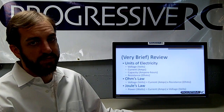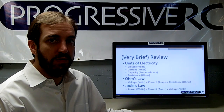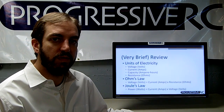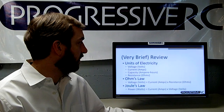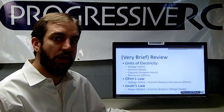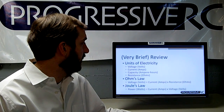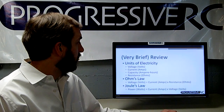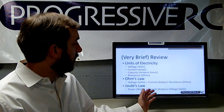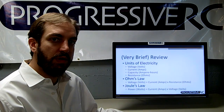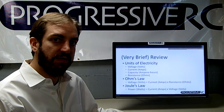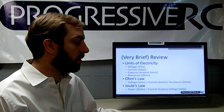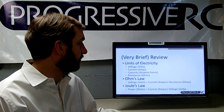First, a very brief review. Last week we introduced units of electricity and a couple of important laws we'll use today. The units are voltage in volts, current in amps, capacity in ampere hours, and resistance in ohms. We also introduced Ohm's Law — voltage equals current times resistance — and Joule's Law — power equals current times voltage.